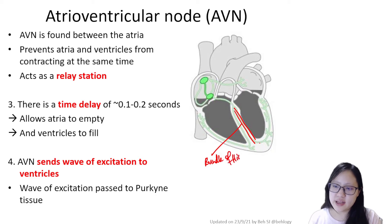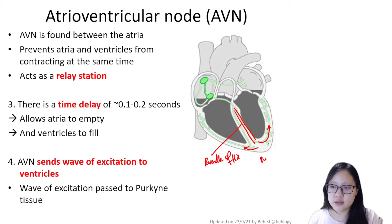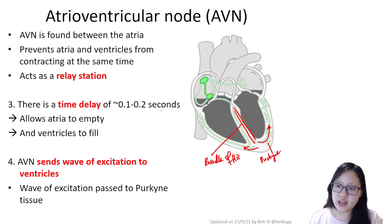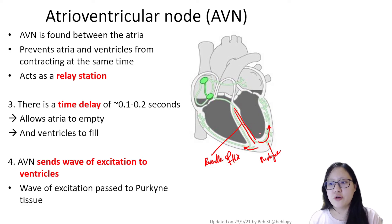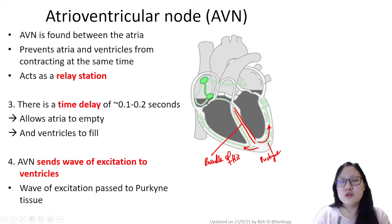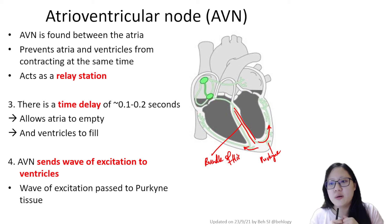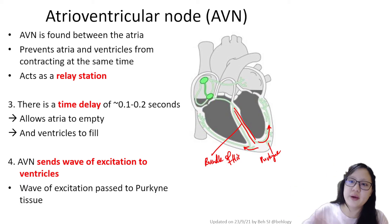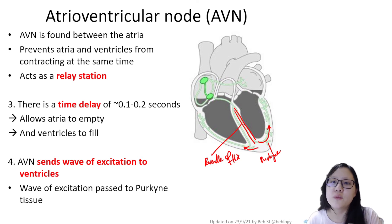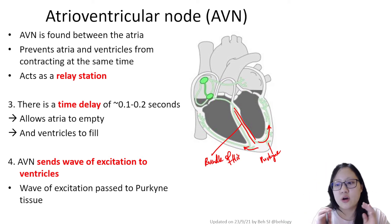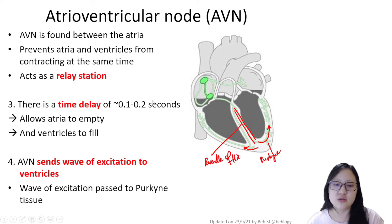The impulse then spreads upwards from the base of the heart to the sides — the walls of the ventricle — via the Purkinje tissue. The reason for this is that blood will be pushed from the bottom up, so ventricular systole occurs from the base upward. It's like pushing toothpaste from the bottom of the tube to the top, making sure everything is squeezed out. The contraction starting at the base helps empty the ventricles more effectively.